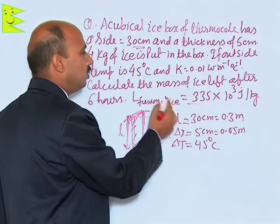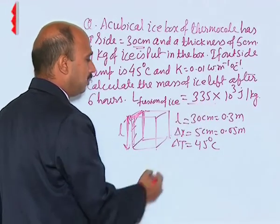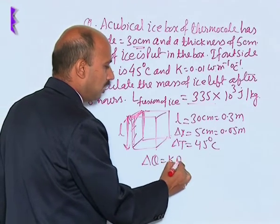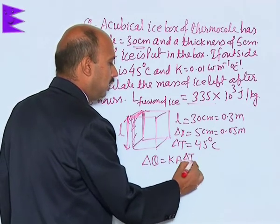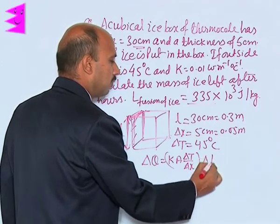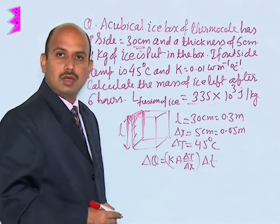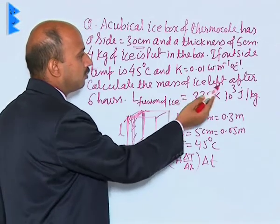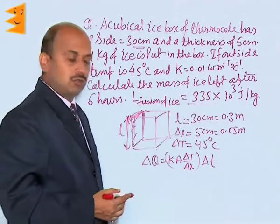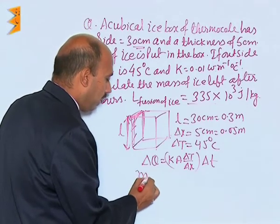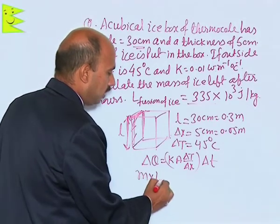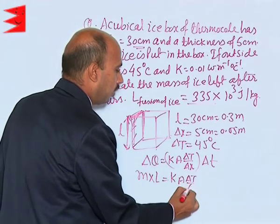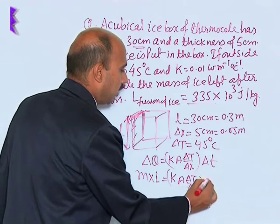k is given in this question and time is also given. So we can write delta Q equals k into A, delta T upon delta x, into the time interval. Whatever ice will be melting, we calculate the mass of ice left. So we write M into L, because the latent heat is given, equals k A delta T upon delta x into delta T.